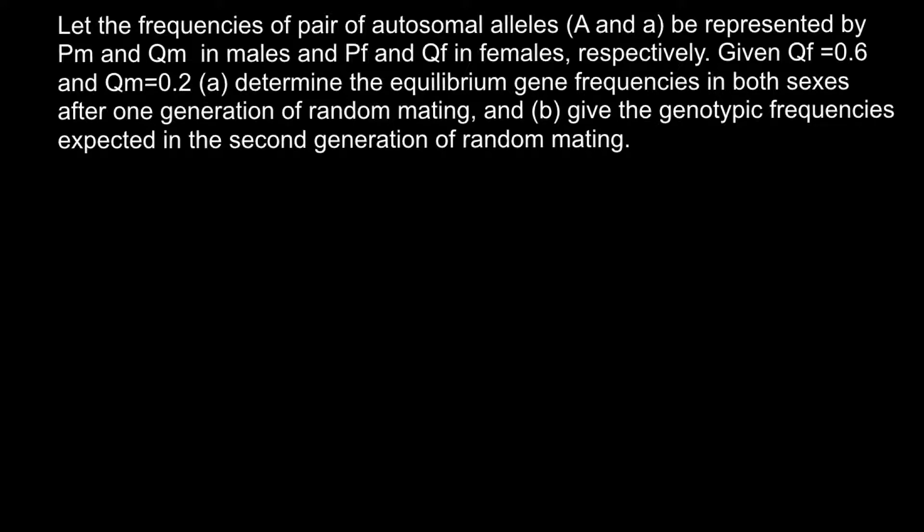What is unusual about this problem is that the frequencies of alleles in both males and females are different. Normally we do not see such things happen. Under what circumstances can we see that frequencies of alleles would be different in males and females? And once again, this is autosomal alleles — this is not a sex-linked trait. So normally we should see equal allele frequencies in both males and females. For example, imagine that in some population most males belong to blood group A and most females to blood group B or AB.